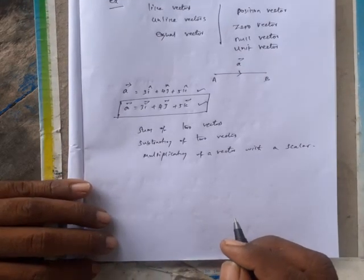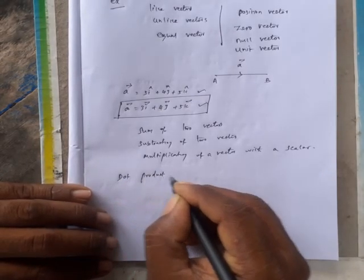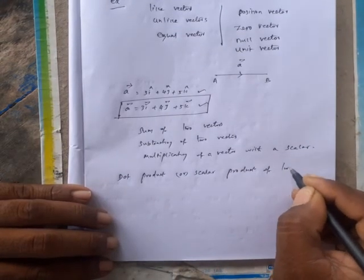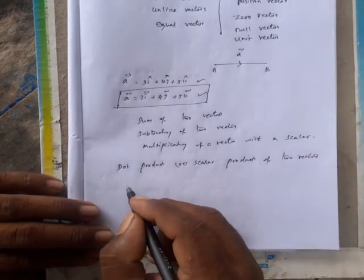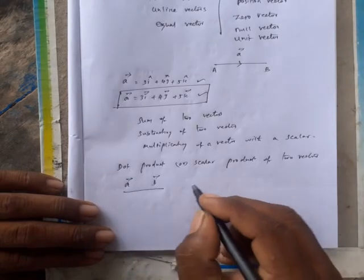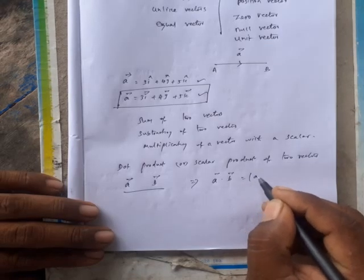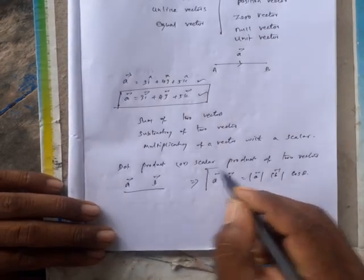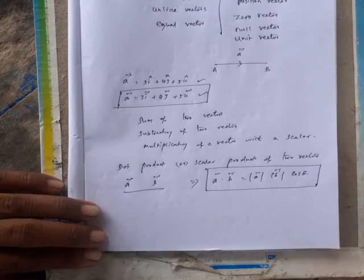The product of two vectors is defined in two types. The first is the dot product, also called the scalar product of two vectors. If A vector and B vector are any two vectors, the dot product is represented as: A vector dot B vector equal to modulus of A vector times modulus of B vector times cos theta.